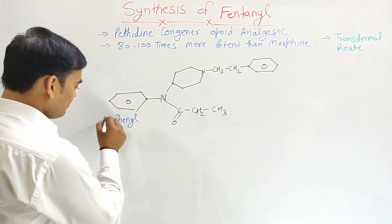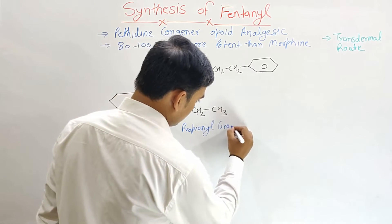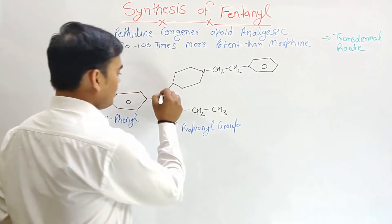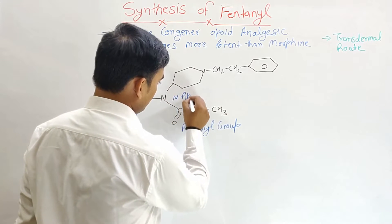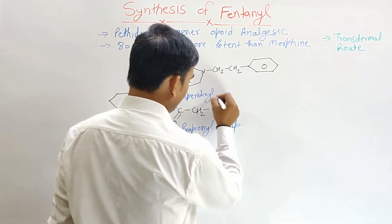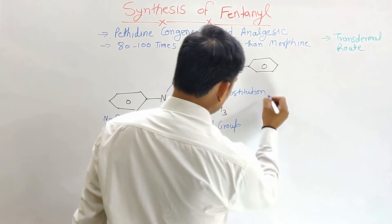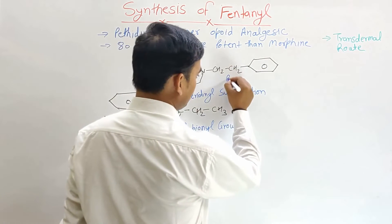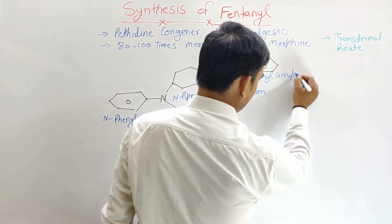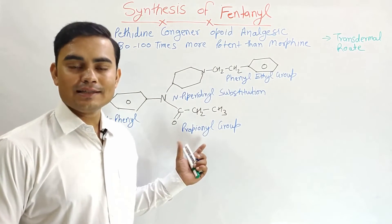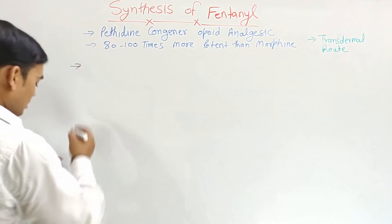So we have phenyl here, and phenyl here, the propionyl group here, the piperidine nitrogen, the piperidine substitution, and the phenylethyl group. These are the four different groups that combine to make fentanyl. Now let's discuss the synthesis of fentanyl.